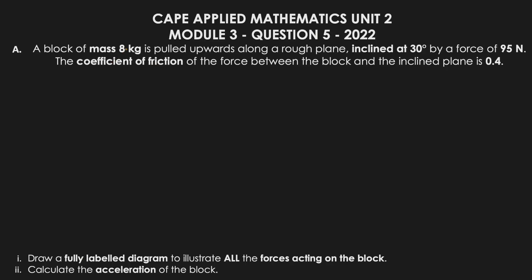A block of mass 8 kilograms is pulled upwards along a rough plane. The rough plane indicates there is friction. The plane is inclined at 30 degrees, with a pulling force of 95 newtons. The coefficient of friction between the block and the inclined plane is 0.4.